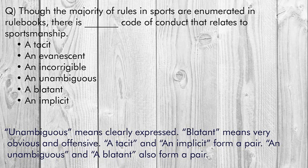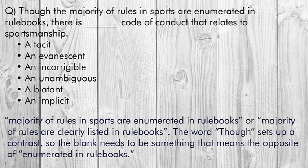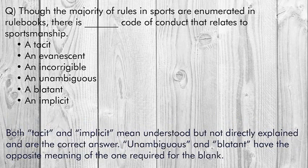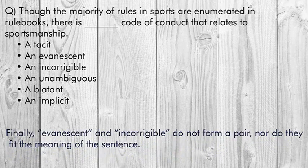Now friends, you must try this question — you can pause this video. The majority of rules in sports are clearly listed in rule books. The word 'though' sets up a contrast, so the blank needs to be something that means the opposite of enumerated in rule books. Both tacit and implicit mean understood but not directly explained, and are the correct answers. Unambiguous and blatant have the opposite meaning required. Evanescent and incorrigible do not form a pair.